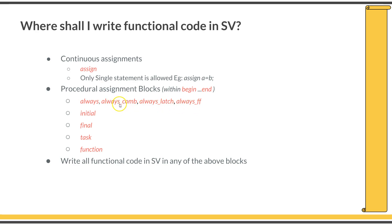For the time being, you can ignore always_comb, always_latch, and always_ff, as these will be useful in RTL coding. As a verification engineer, you can just focus on always alone. The procedural programming assignment blocks are: always, initial, final, task, and function.